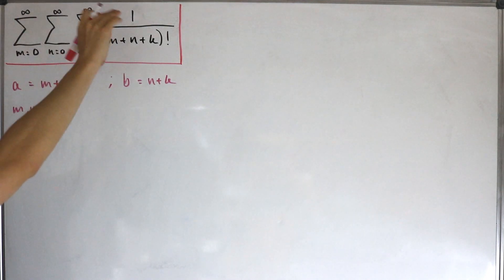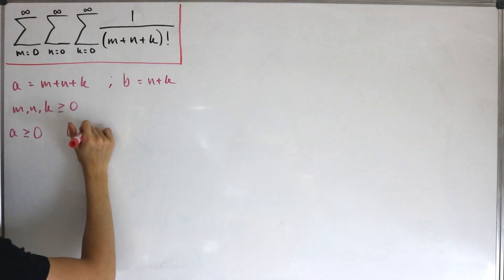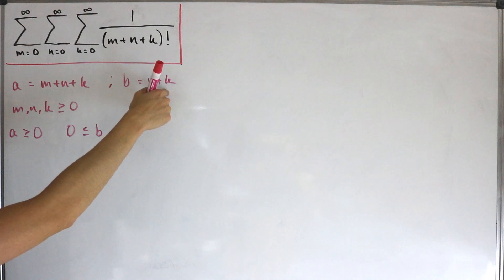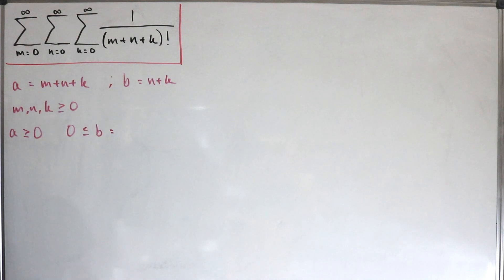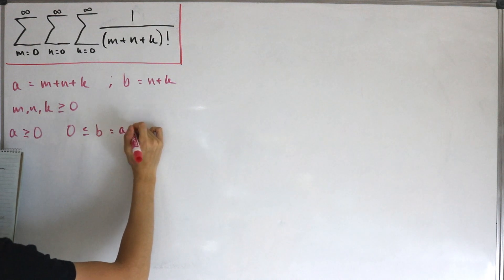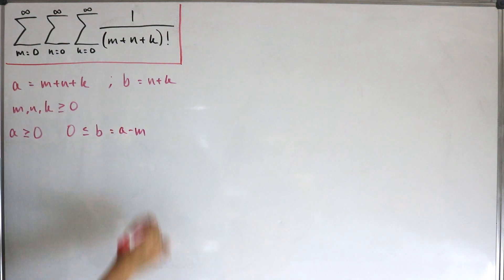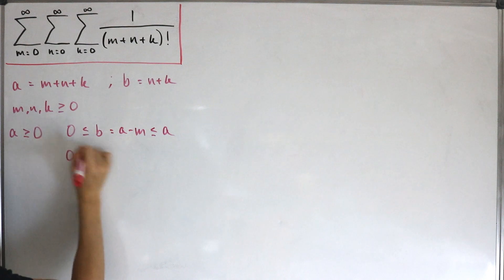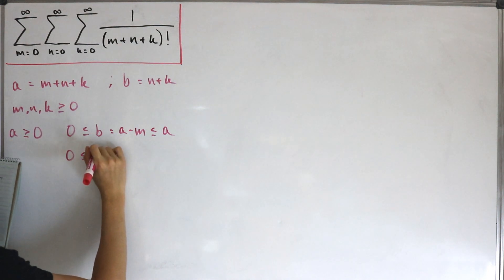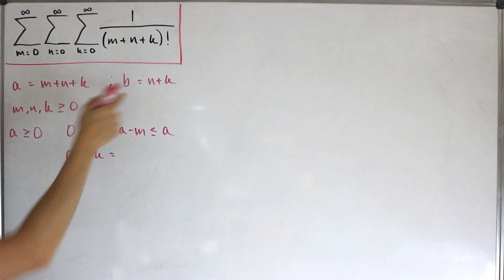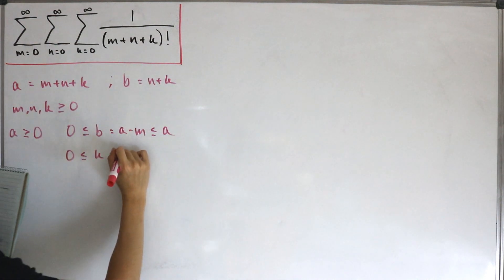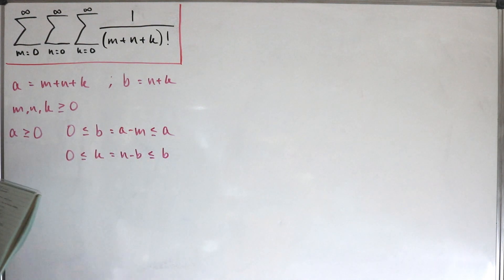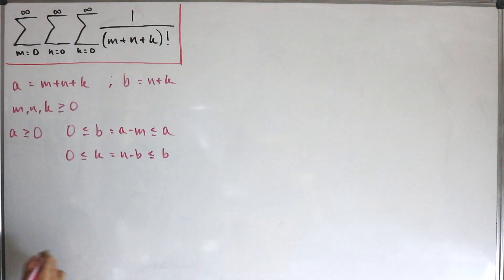We can now create bounds for all our sigma notations. Notice that zero is less than or equal to b, which equals n plus k — in other words, that's the same as a minus m — and this is less than or equal to a. Similarly, zero is less than or equal to k, which equals n minus b subtracted, and that is less than or equal to b.